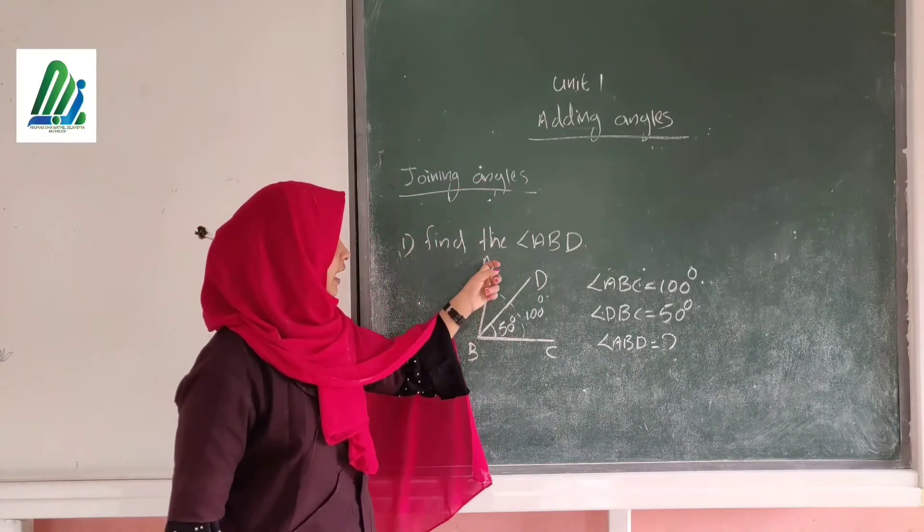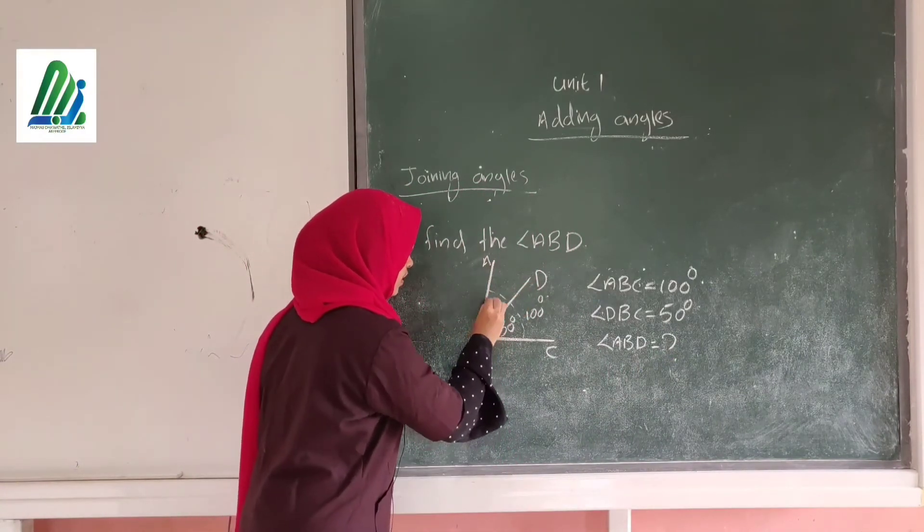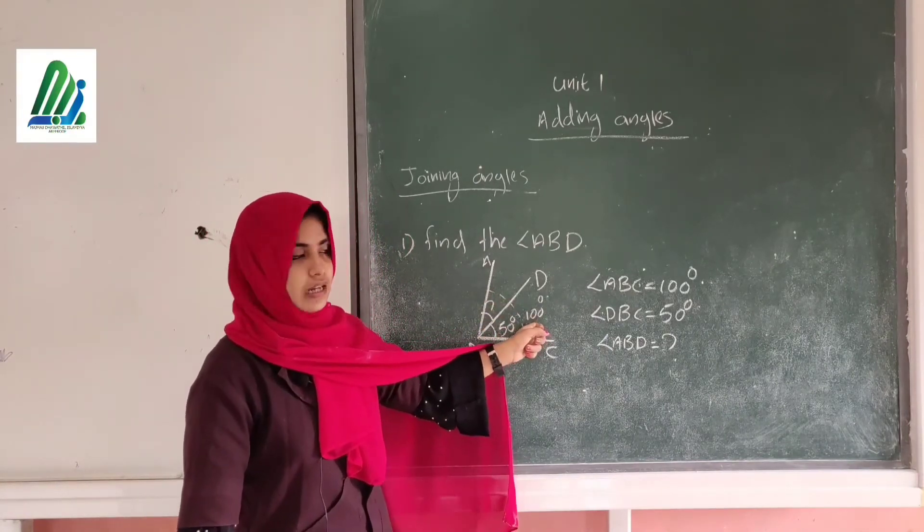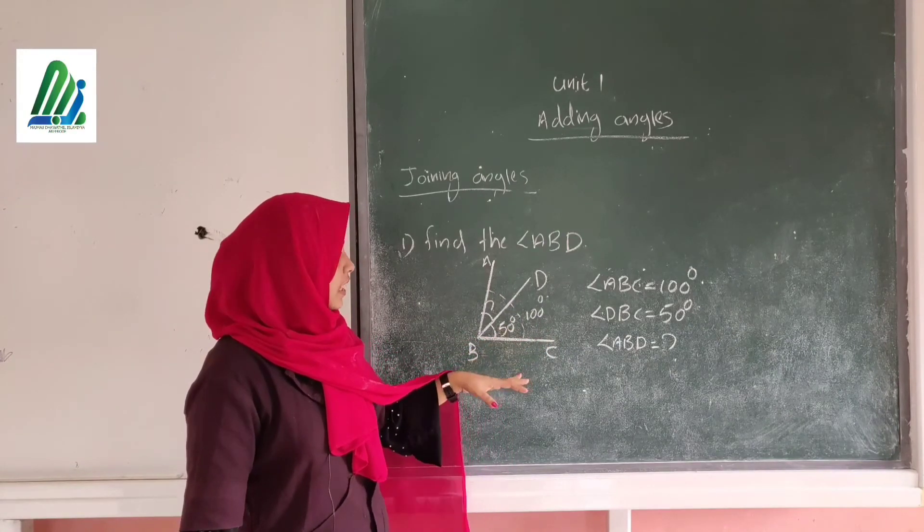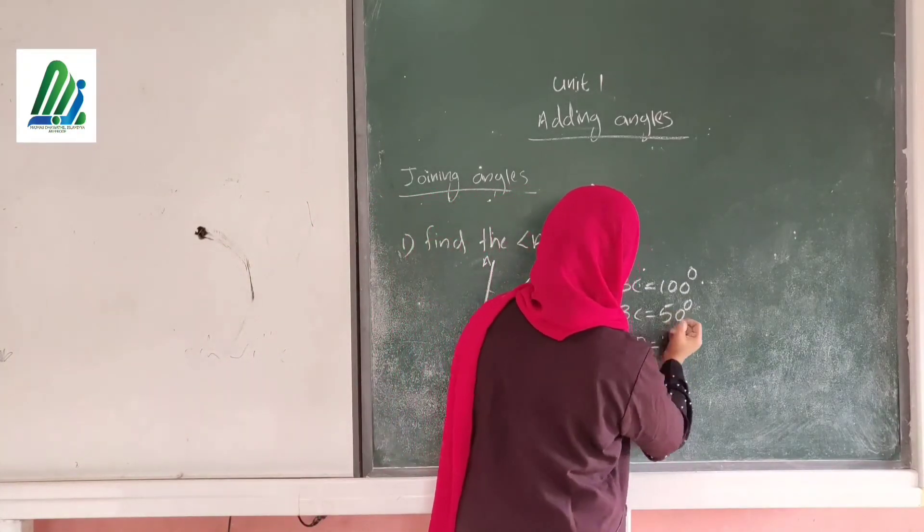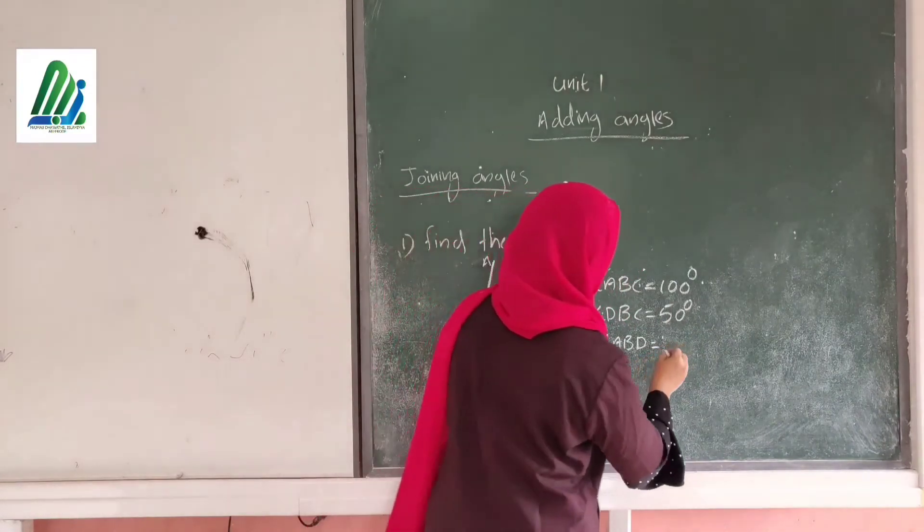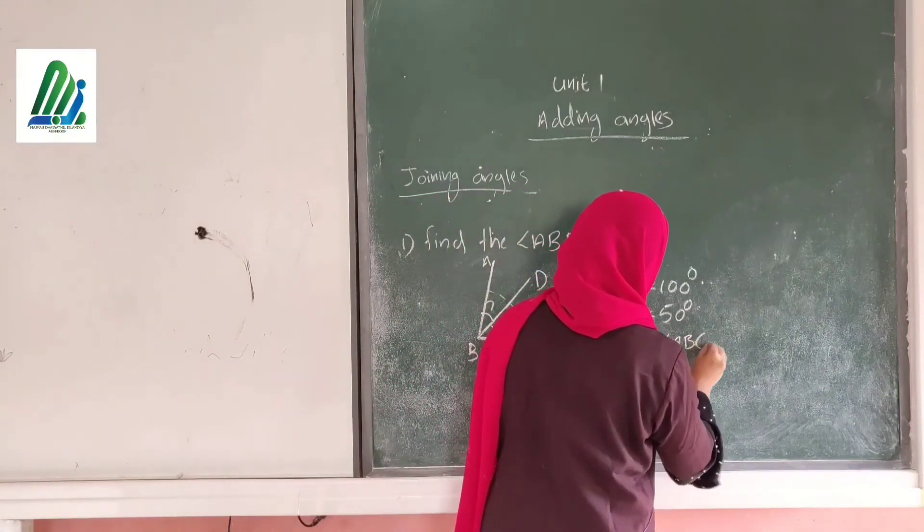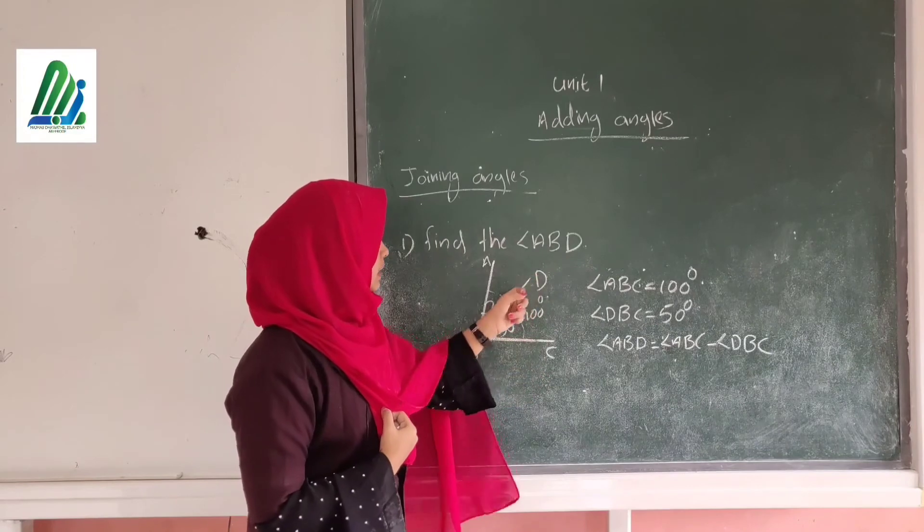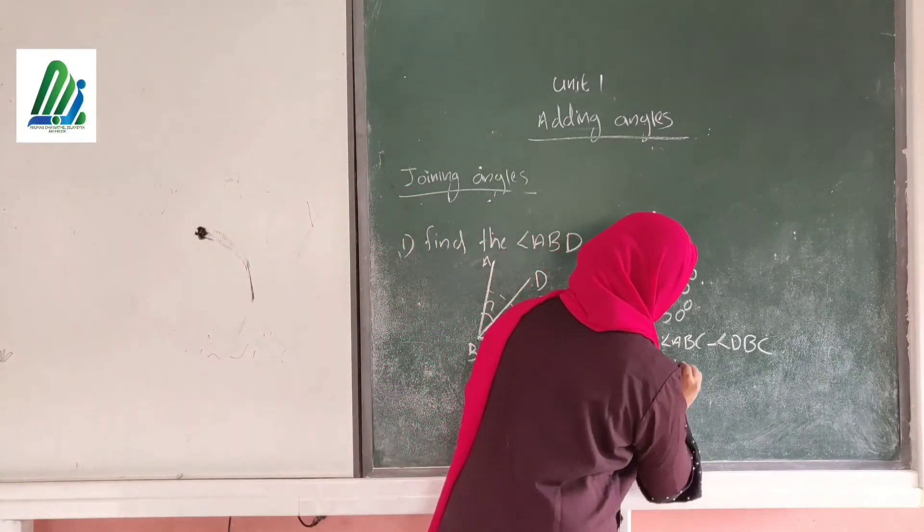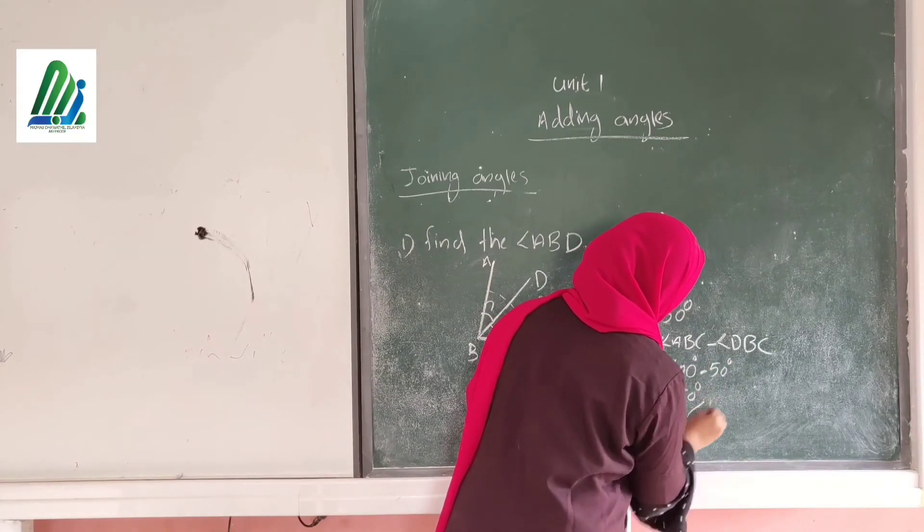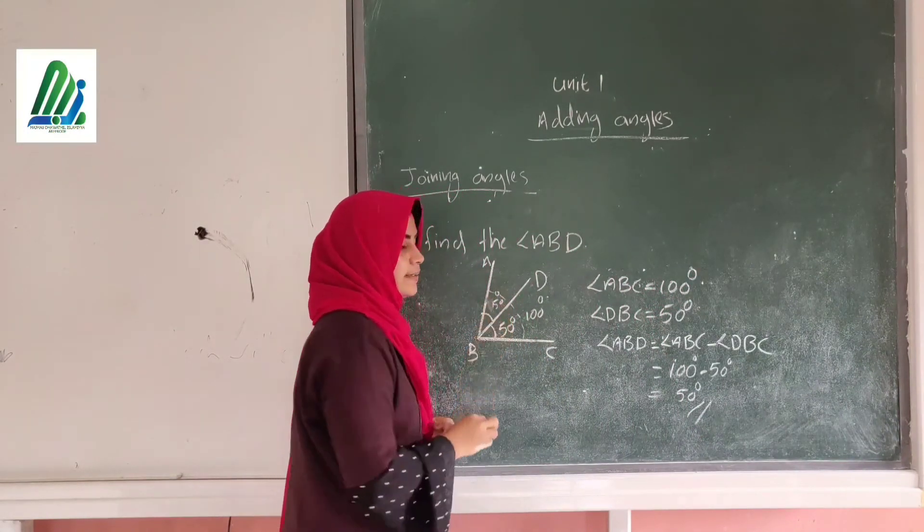So, how can we find this angle? It's an easy question. Here, the larger angle is 100 degrees, and this angle is 50 degrees. So when we subtract this angle from 100 degrees, we get angle ABD. Angle ABD equals angle ABC minus angle DBC. The angle ABD equals 100 minus 50. So when we subtract 100 minus 50, we get 50 degrees. This angle is 50 degrees. Okay?